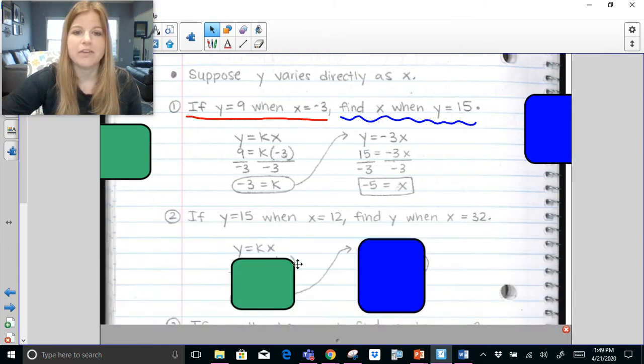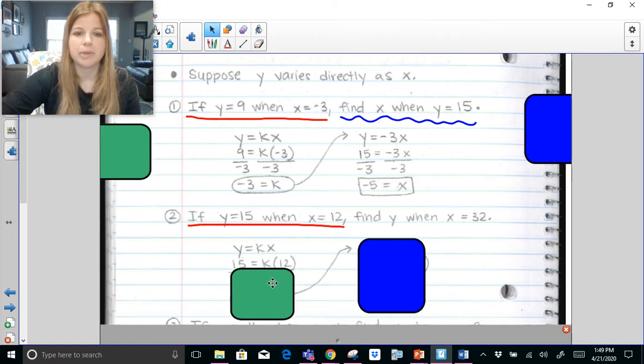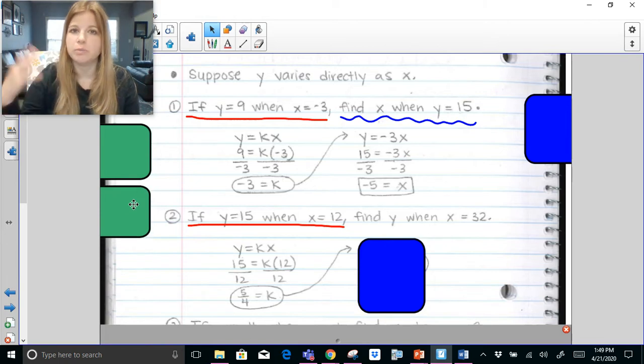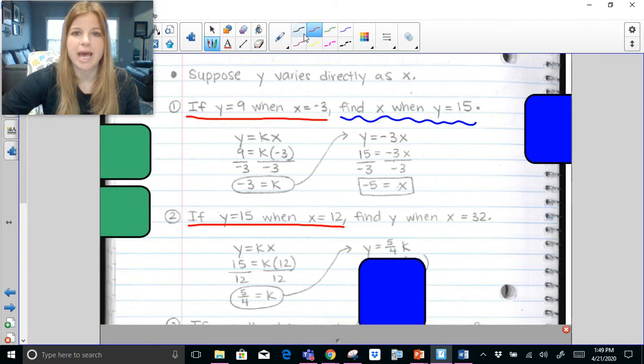Let's try the next one. If y equals 15 when x equals 12. So that's my first part, y equals 15 when x equals 12. So I'm going to go ahead and plug in a 15 for y, a 12 for x. I'm going to go ahead and solve for k. So I need to divide both sides by 12. Now 15 over 12 simplifies to 5 fourths, which is my k value. It could also be 1.25. I'm going to use that k value to write my equation of y equals 5 fourths x.